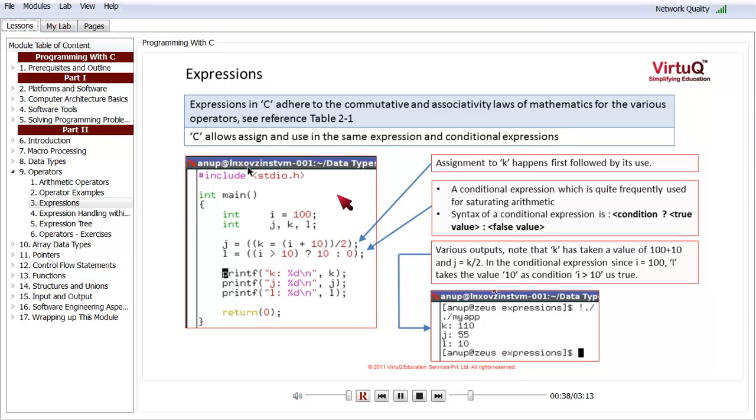We have an integer variable i which has been assigned a value of 100. Then we have integer variables j, k and l. j has been assigned the value in a somewhat complicated fashion. On the right hand side, first of all k is assigned the value of i plus 10 because this is in the parentheses, so it happens first. Then the value of this is divided by 2 and assigned back to j.